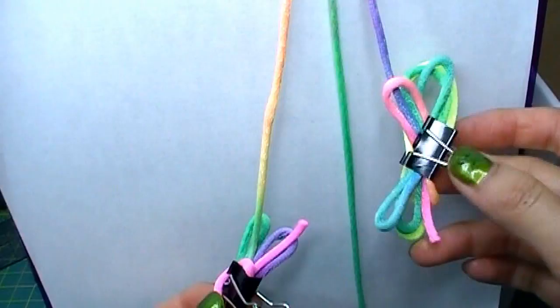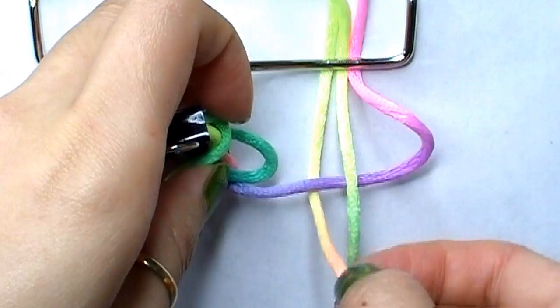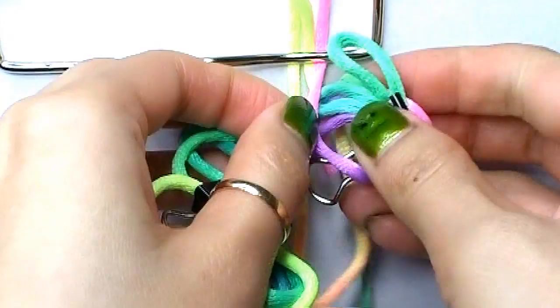So first, I'm going to start on the right side. It really doesn't matter how you start, just as long as you alternate later on. I place the right string under the base string and then over the left string just like so. Now with the left string, it goes over the base and then through the loop. I pull on both sides equally so it tightens up.